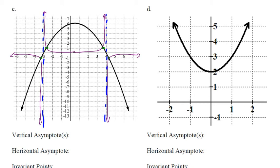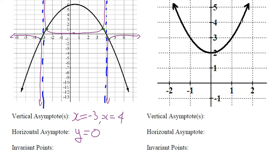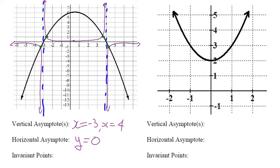Asymptotes: x = negative 3 and x = positive 4. Horizontal asymptote: y = 0. Invariant points are approximately (negative 3.2, negative 1), (negative 2.8, 1), (3.8, 1), and (4.2, negative 1).